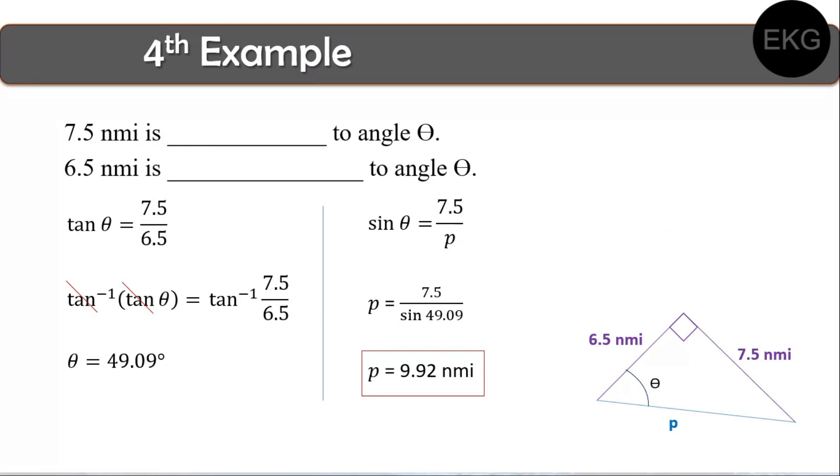That P, the distance from the origin to the final point, is actually 9.92 nautical miles. So there you have it, an application of trigonometry to your chosen profession, which is, bakit may angles, bakit may nautical miles, bakit may term na knots, those things is actually related to the marine transportation.